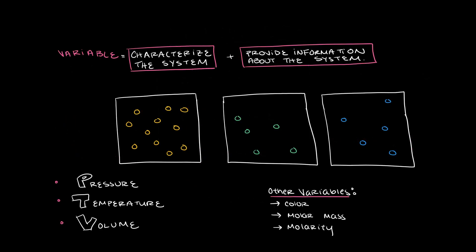In science, variables characterize the system. If we consider a box of gases as the system, pressure, volume, temperature all provide information about the system and thus they are variables. Other variables can be the color, the molar mass, or the molarity of the gas.